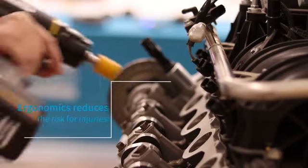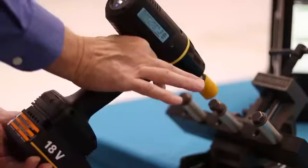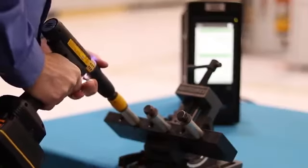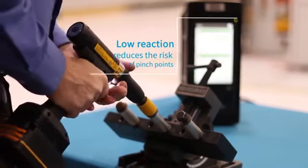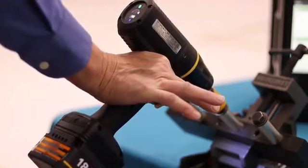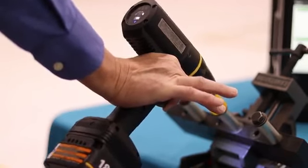Excellent ergonomics reduces the risk for injuries. The very low vibrations of the TBP significantly reduce the risk of vibration-related injuries. Low reaction reduces the risk of pinch points, and the SRB and TBP are very well balanced, which reduces the stress on wrists and arms.